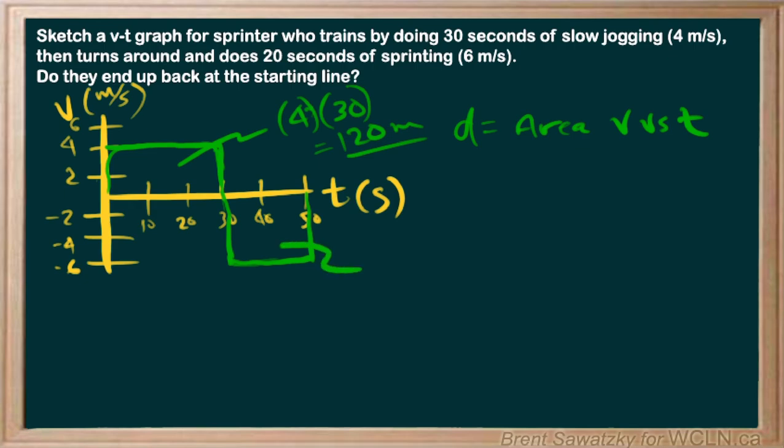And then we have this area down here. And so this is the area or the displacement after he turns around and starts heading backwards. So here we would say minus six for the velocity, and we have 20 for the time. And we multiply those together, and we have minus 120. And again, that would be meters. So takes 120 meters there, and then turns around and goes faster, but for a shorter amount of time, and covers 120 meters on the way back.